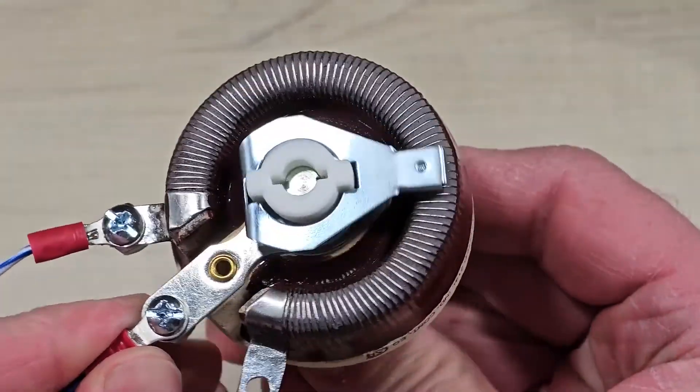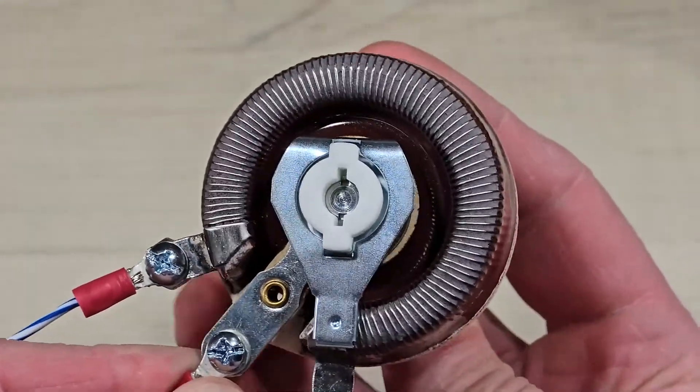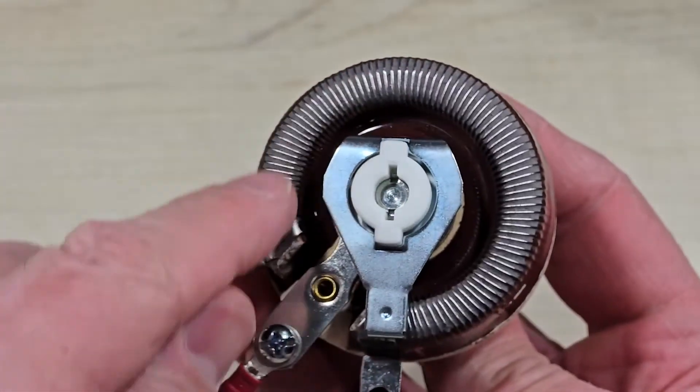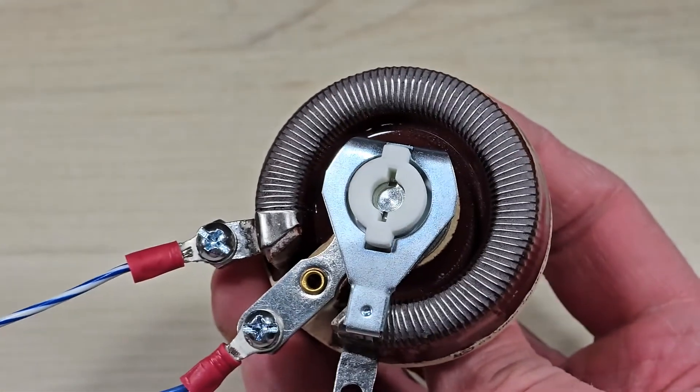If we set it here, half. If we set it here, the entire circumference, or the entire winding of the resistor, is in the circuit.